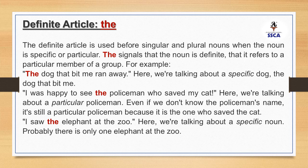For example, 'the dog that bit me' — here we are talking about a specific dog, not just any dog, so we use 'the'. In example number two, 'I was happy to see the policeman who saved my cat' — here we are talking about a particular policeman. Even if we don't know the policeman's name, it is still a particular one because he is the one who saved the cat.